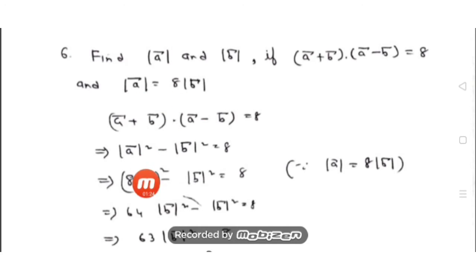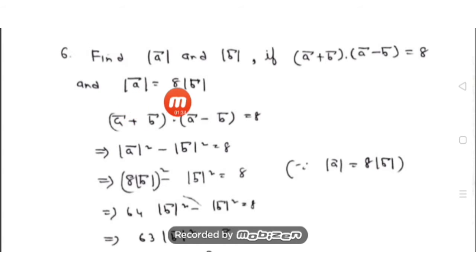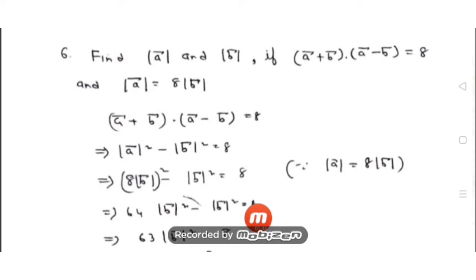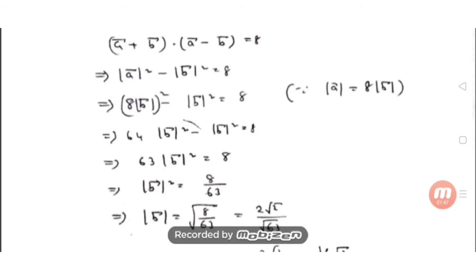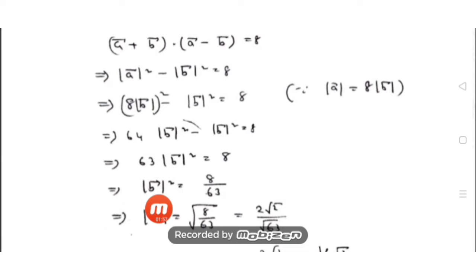Now we substitute the value of |a| in terms of |b|. It is given that |a| = 8|b|, so substituting: 8² |b|² - |b|² = 8, giving 64|b|² - |b|² = 8, so 63|b|² = 8, therefore |b|² = 8/63. Taking the square root gives |b| = √(8/63). We don't give ±  since magnitude is always positive.